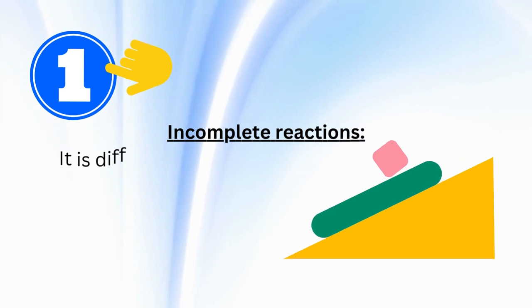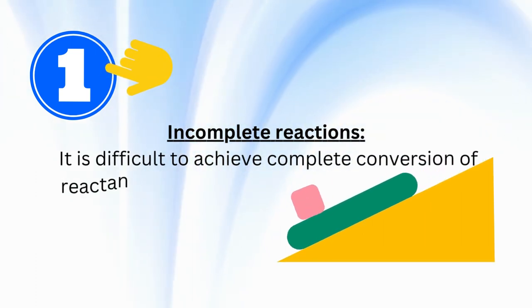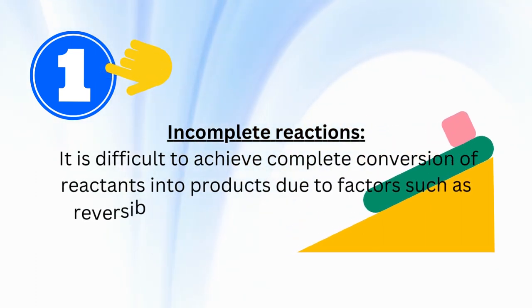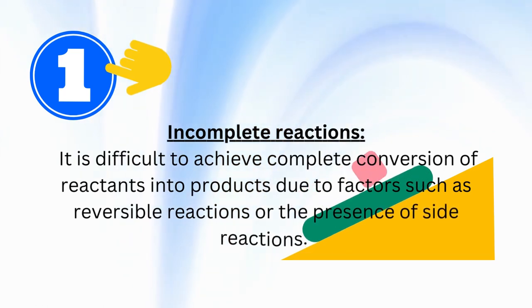Number 1. Incomplete reactions. It is difficult to achieve complete conversion of reactants into products due to factors such as reversible reactions or the presence of side reactions.